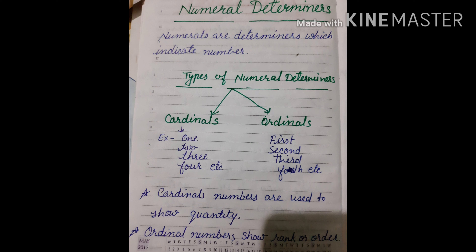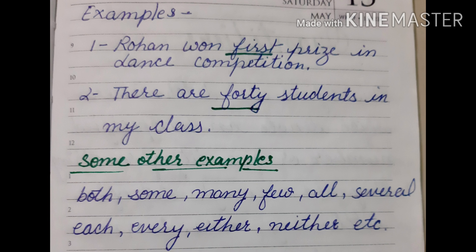Cardinal numbers are used to show quantity, and ordinal numbers are used to show rank or order. Now look at some examples: Rohan won first prize in the dance competition. There are 40 students in my class. In the above sentences, 'first' and '40' are numeral determiners.